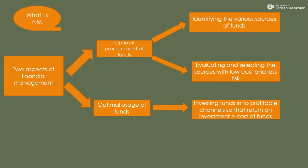We can understand the concept of financial management with the help of a diagram. In this diagram, there are two main aspects of financial management. The first aspect is optimum procurement of funds — it means identifying the various sources of funds.